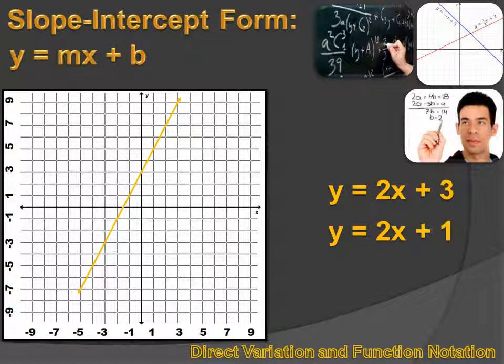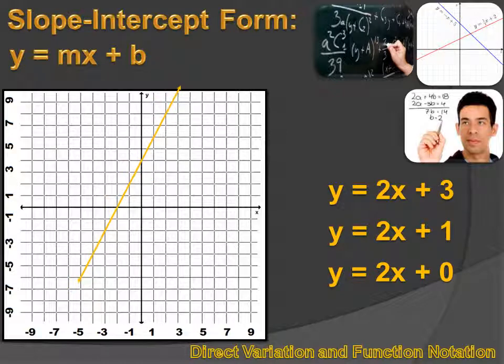How about y equals 2x plus 1? The slope's the same, it's still got a slope of 2, but it's going to cross the y-intercept at 1 rather than 3. How about y equals 2x plus 0? Again, the slope's the same, but now we're going to cross the y-intercept at 0.